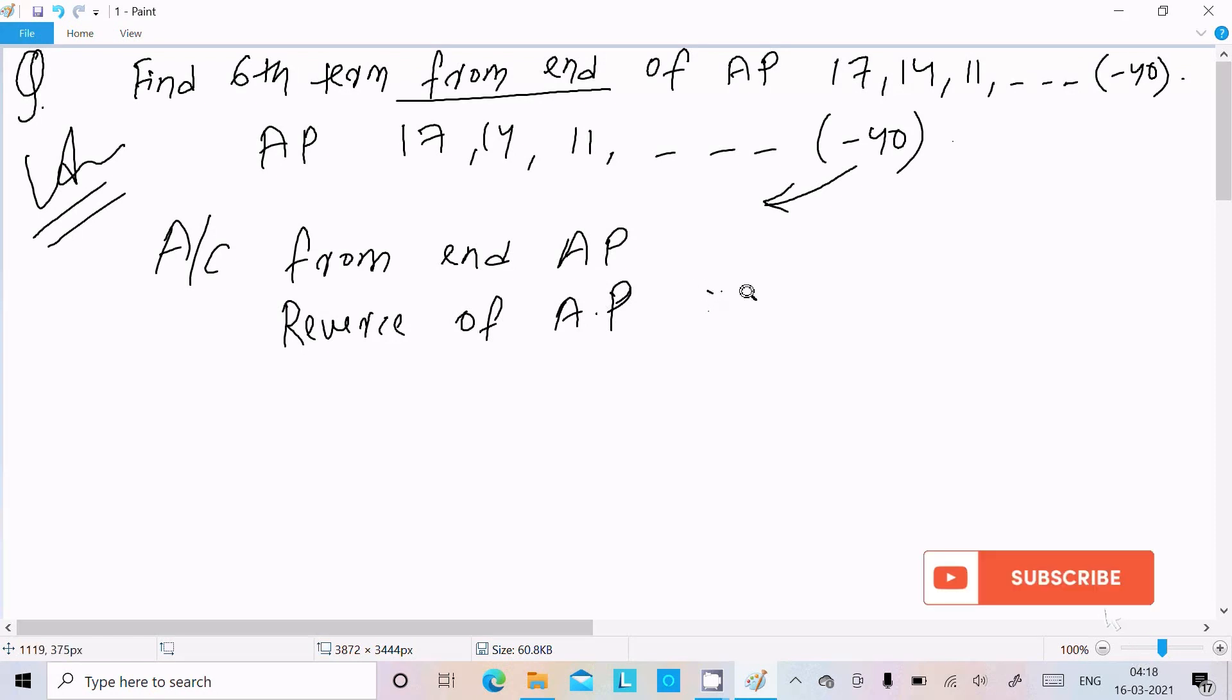So here we can write minus 40. Now you can easily identify the difference d equal to 2nd term minus 3rd term. So 14 minus 17, d equal to minus 3. OK, so here minus 40, now I got minus 3. So here it will do the decreasing order, so next is, or difference is minus 3.